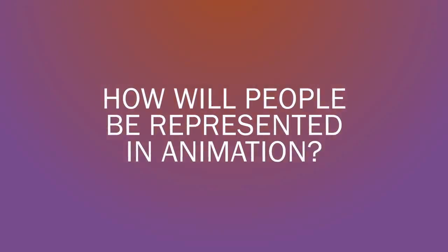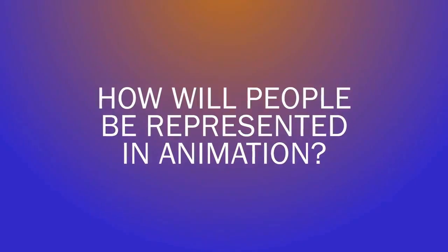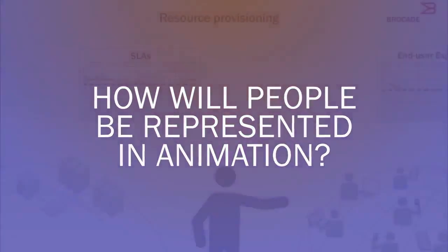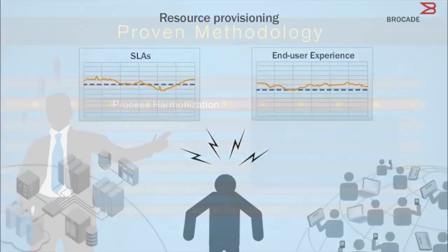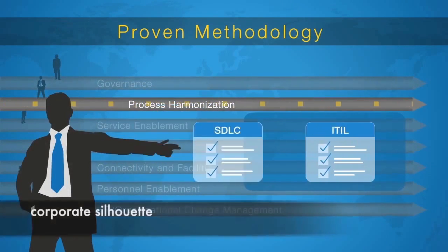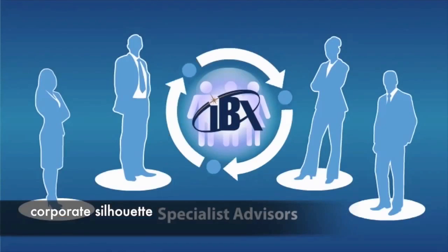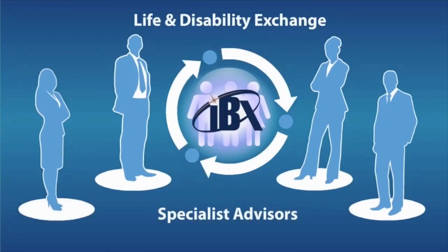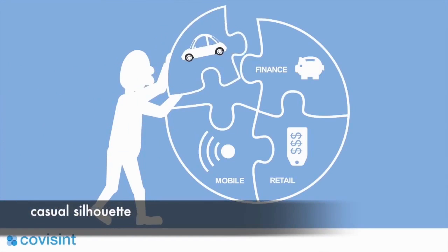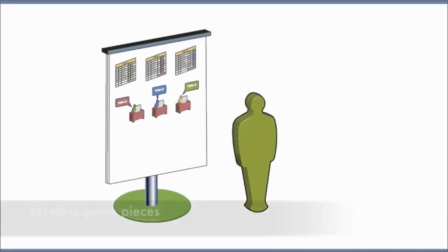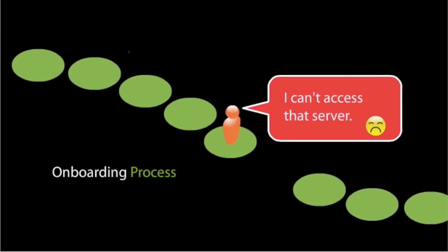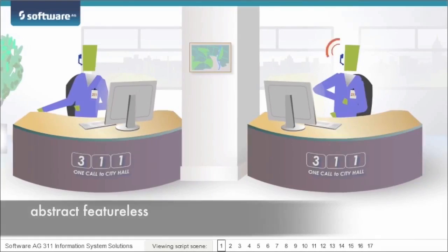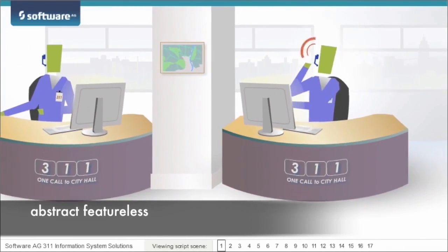How will people be represented in animation? You've got your stick figures who basically stand around and point at things. What we call a corporate silhouette. More casual silhouettes. Faceless game pieces. Abstract featureless people.